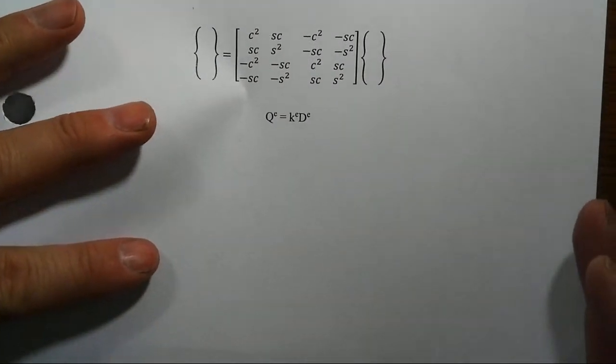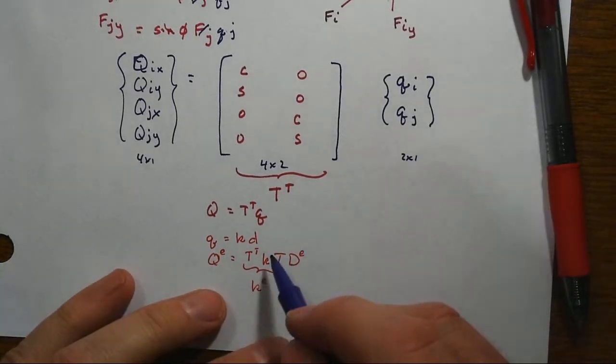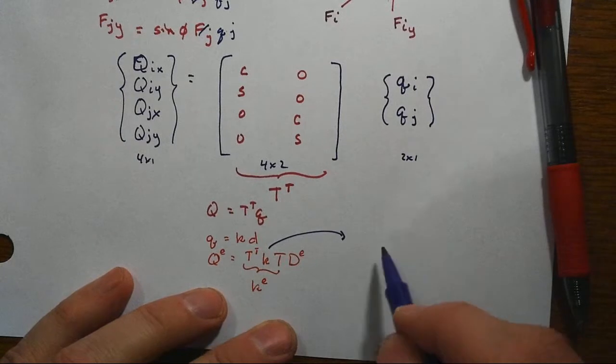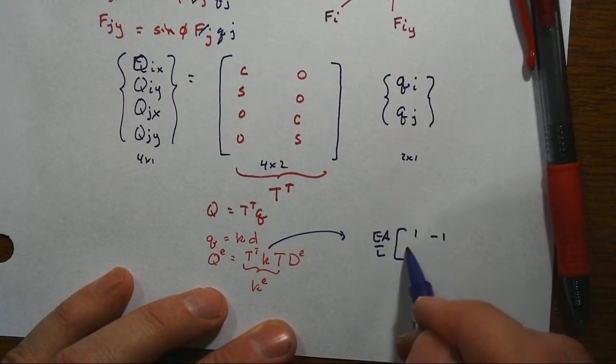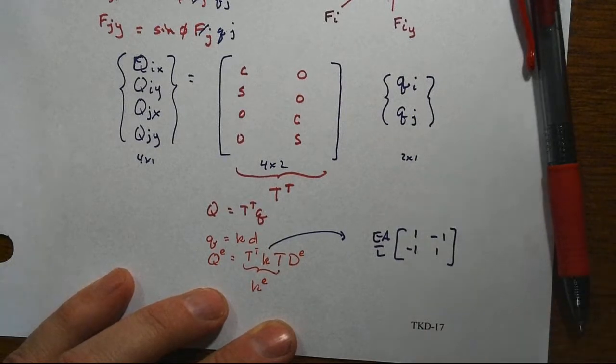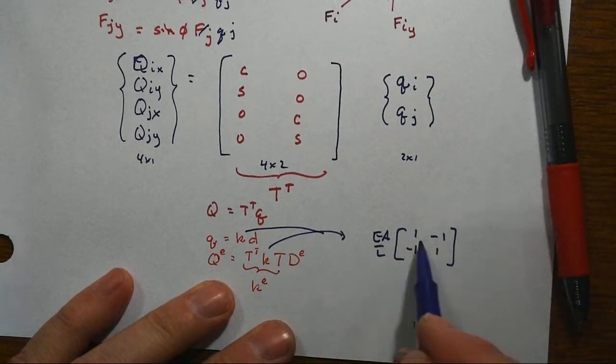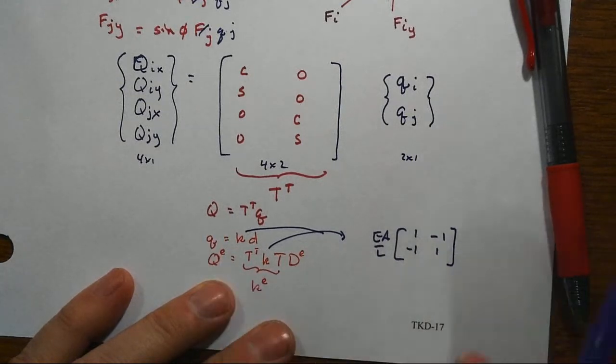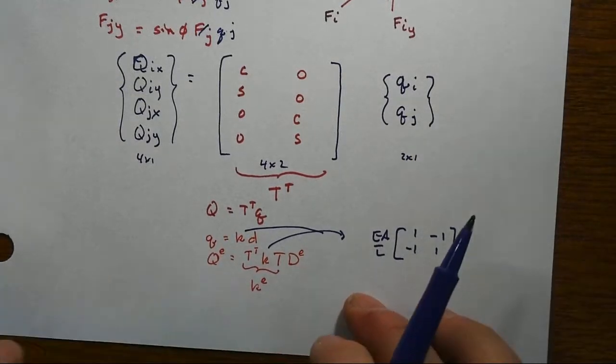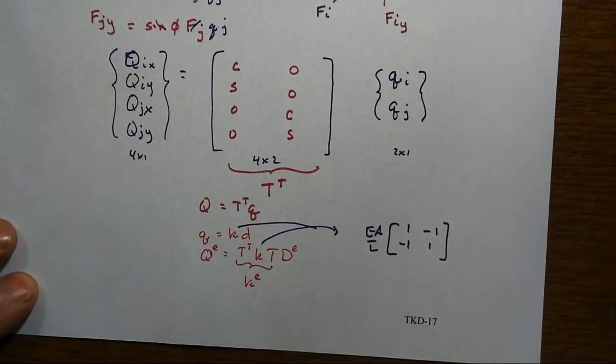That one right there. And partly there the way we get there is, don't forget that this little k is EA over L times the little square matrix. That's what we were, that was coming from right there, right. So this is now taking the little local local situation, local local, and getting in there global global, which is what we're going to need when we start assembling this element into the bigger global structural stiffness matrix.